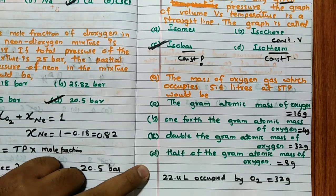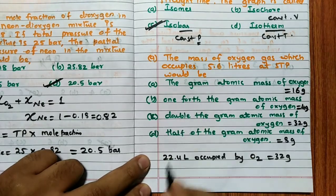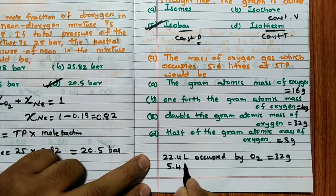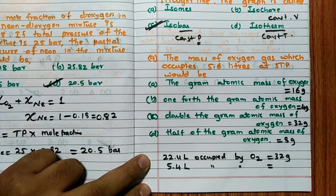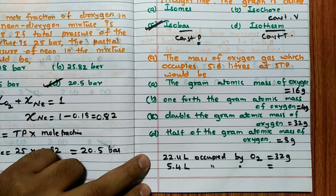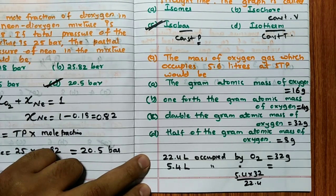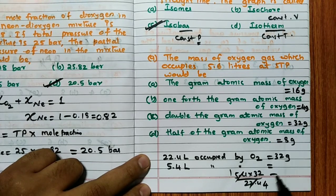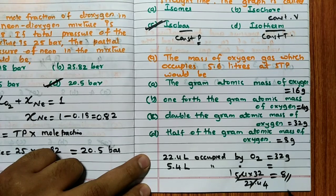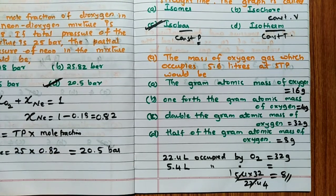See, to calculate this type of question, we know that 22.4 liter occupied by O2, that is equal to 32 gram. Molecular mass of the oxygen is 32. So now what they have given, 5.6 liter occupied by - see 5.6 is very simple calculation. 5.6 into 32 divided by 22.4. So the answer for this question is 8.